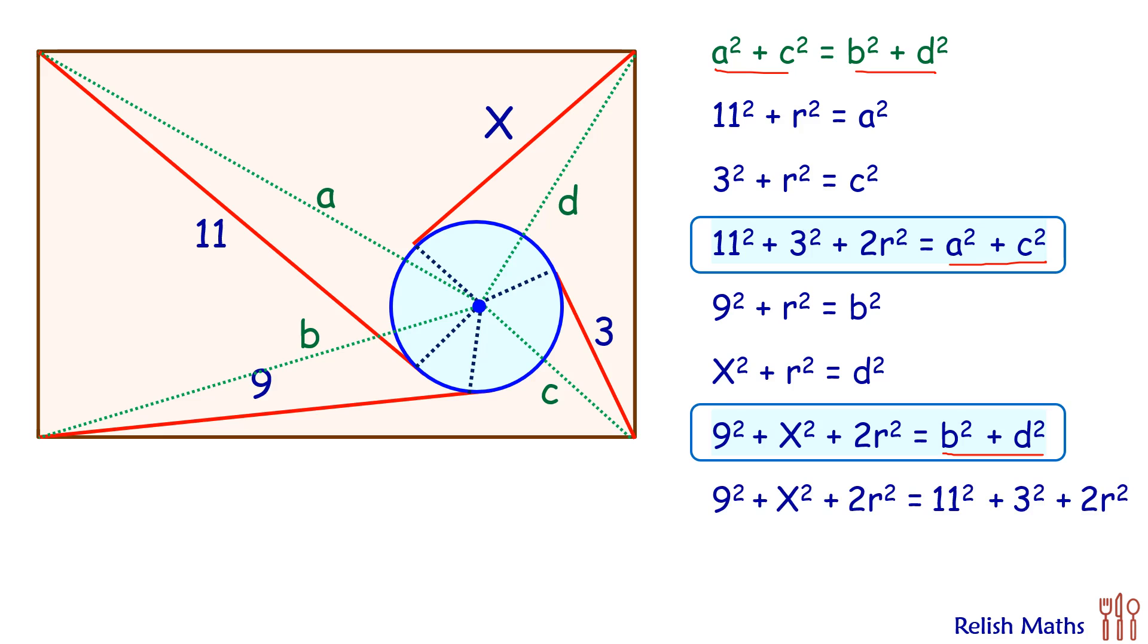Now both the side, 2r² will get cancelled down. Now when we solve it, we will get value of x as 7 centimeter. And that is our answer.